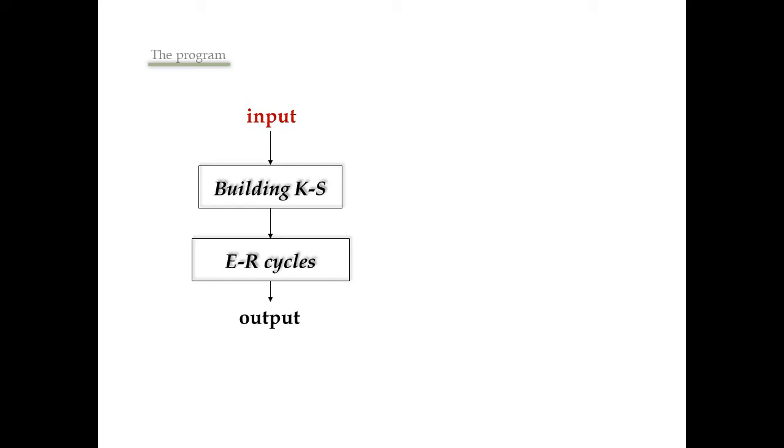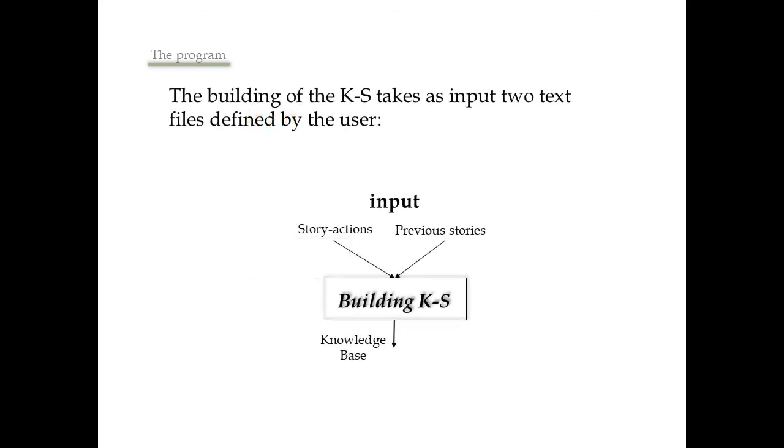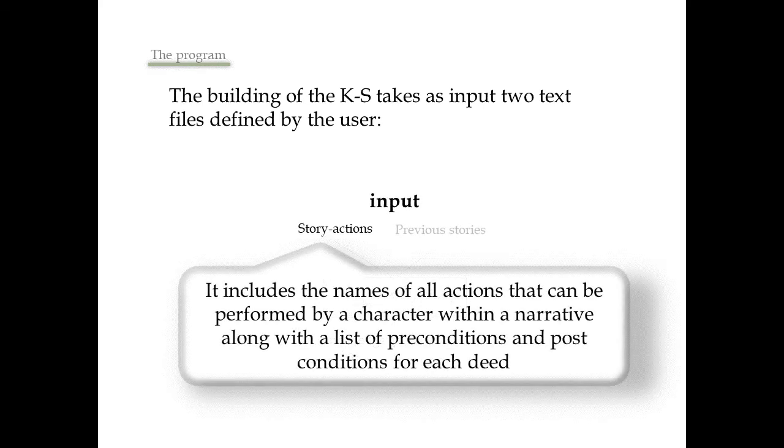What are the inputs of the first block? Mexica employs two text files defined by the user. The first is called story actions or dictionary of story actions. It includes the names of all actions that can be performed by a character within a narrative along with a list of preconditions and post-conditions for each story action.